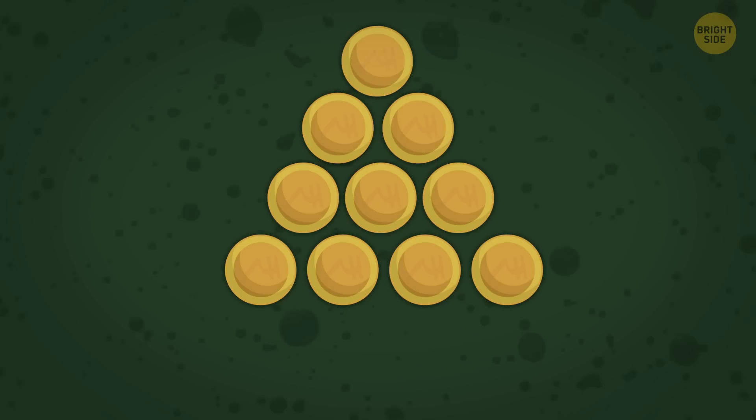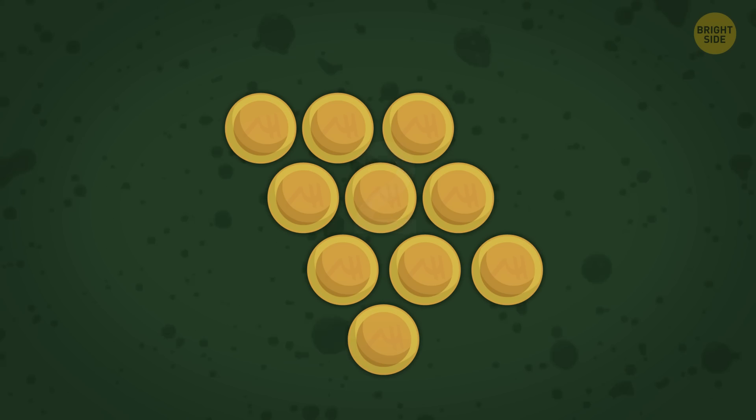First of all, grab this top coin and move it all the way down here. And now just level up these 2 coins. And voila, the triangle is flipped.